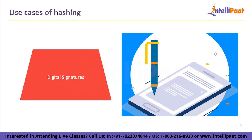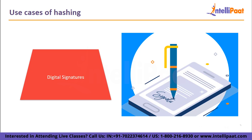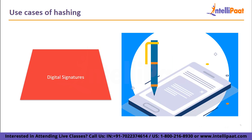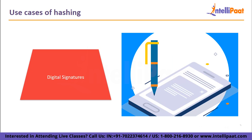Then we have digital signatures. Hashing facilitates the encryption and decryption of digital signatures, which are used to authenticate message senders and recipients, in addition to enabling faster data retrieval. In this scenario, the recipient receives the digital signature separately after it has been altered by a hash function, prior to the hash value or message digest. The fundamental idea behind all hashing algorithms is to convert data into a value that can be used as an index into an array. SHA1, MD5, and MurmurHash are a few common hashing algorithms.